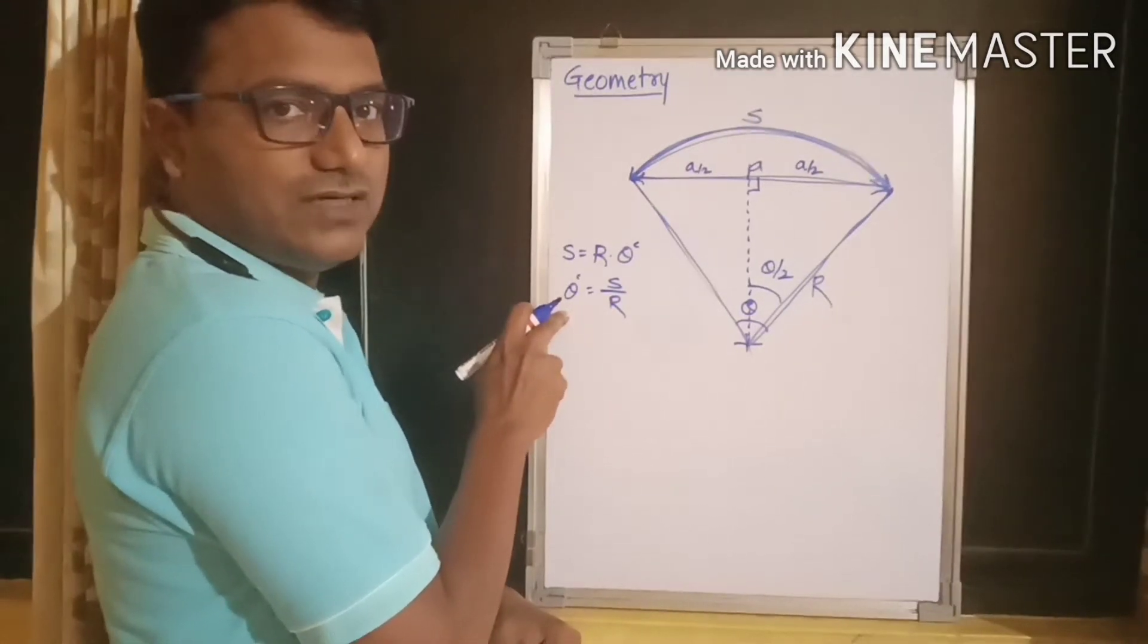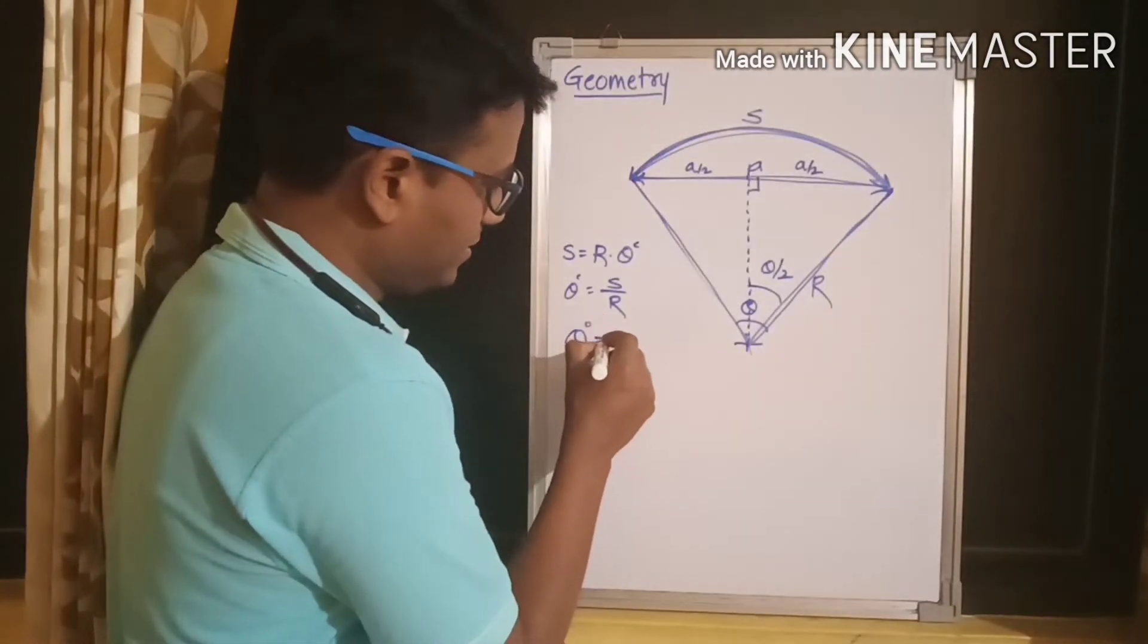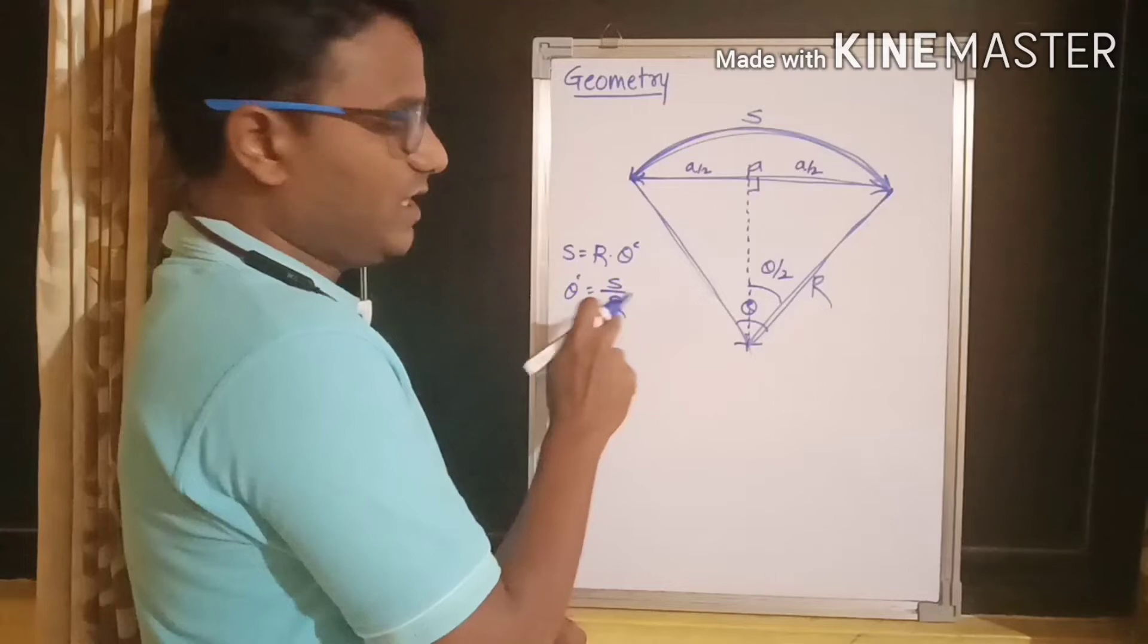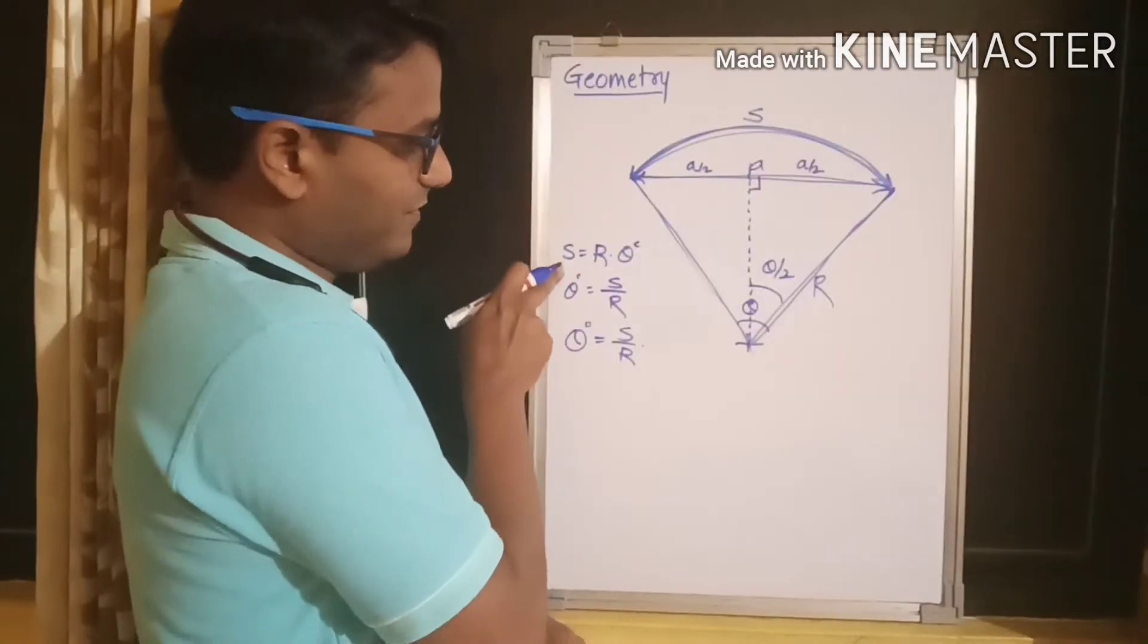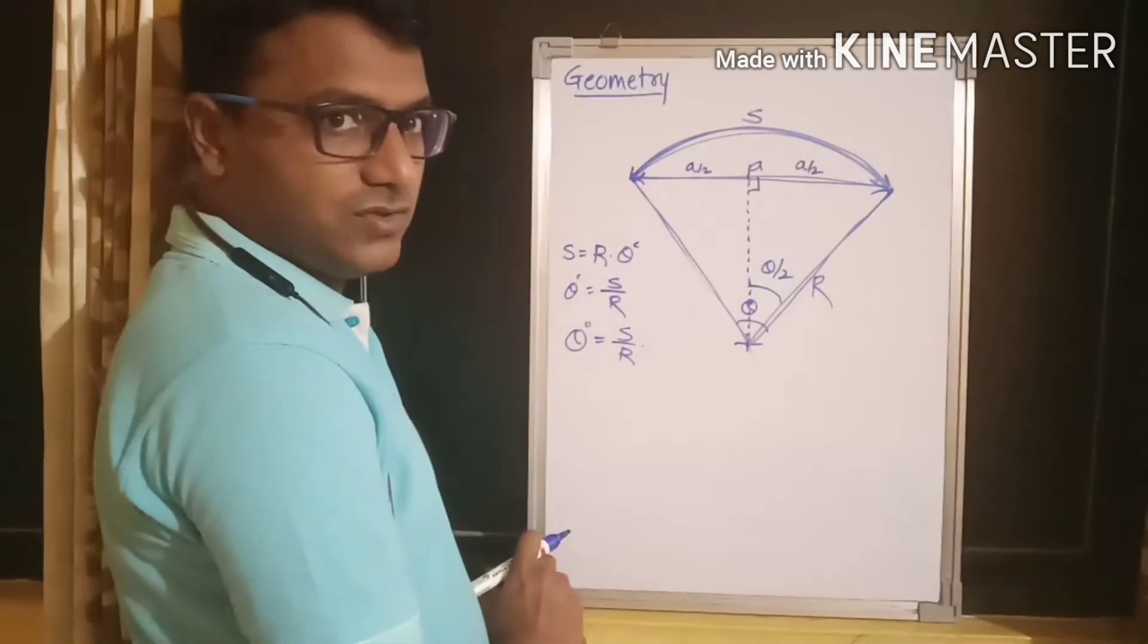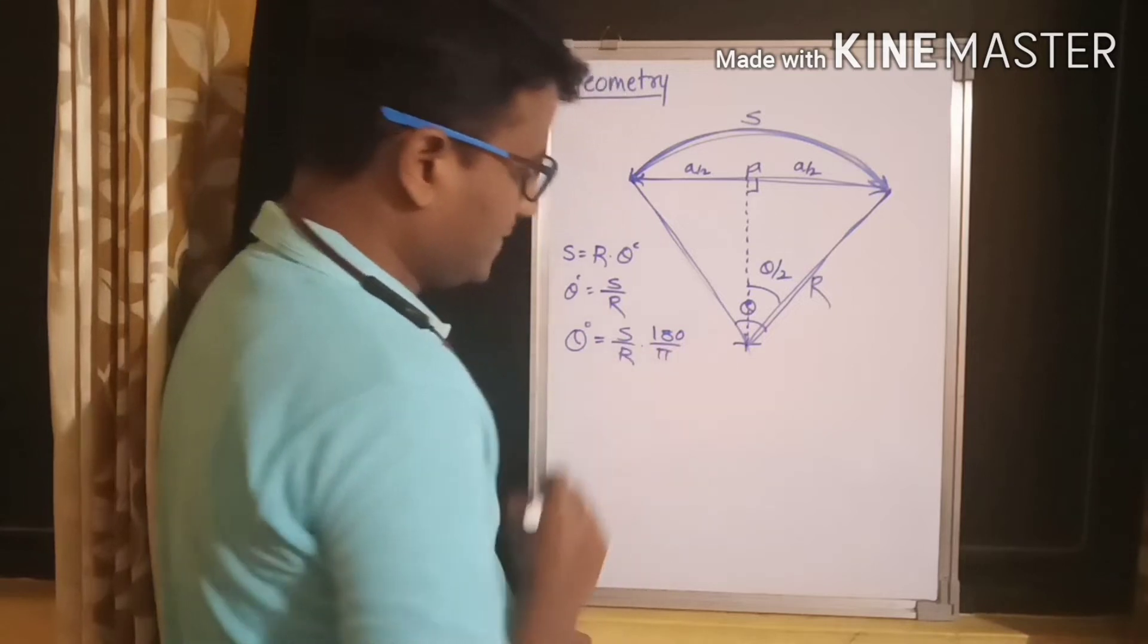Theta angle in radians. I want to convert this into degrees. So, if I want theta in degrees, then I have to multiply this value s by r. I want to convert radians into degrees. So, I have to multiply by 180 by pi.